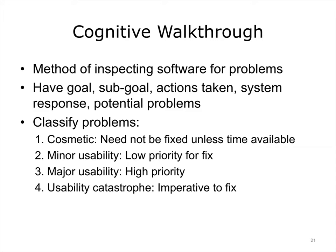Cognitive walkthrough is a method of inspecting software for problems by having an expert evaluator use the system for a typical task. As the expert carries out the task, he or she makes note of each goal and sub-goal, each step, what information a user must know to carry out the step, the system's response, any potential problems that could arise, and potential solutions if they are known. These are listed line by line. The expert can classify the problems by degree of severity — cosmetic problems are the least urgent, while problems that could create medical errors, crash the system, or have other severe consequences would be the highest priority to fix.